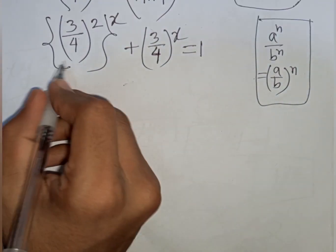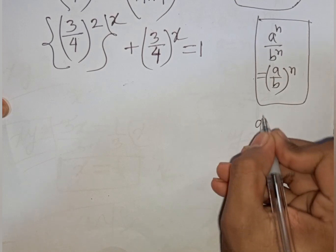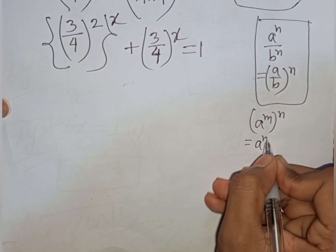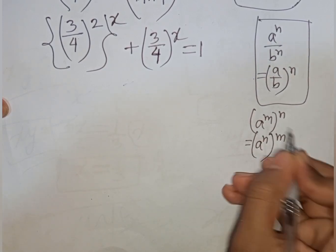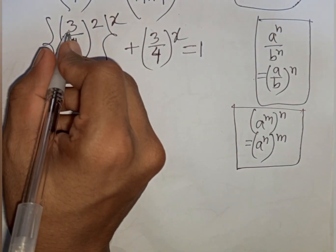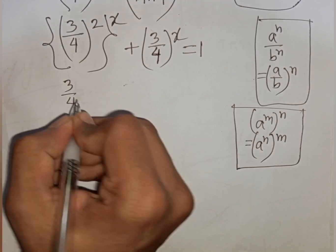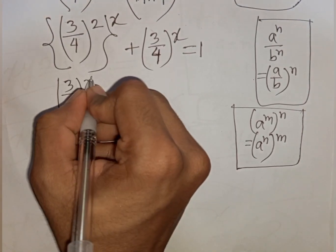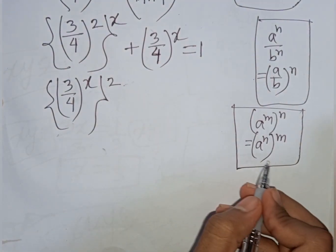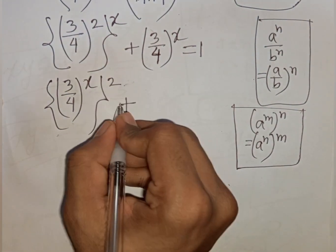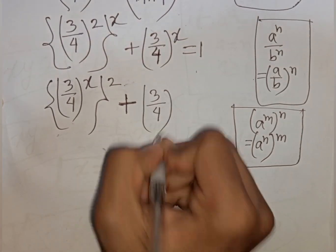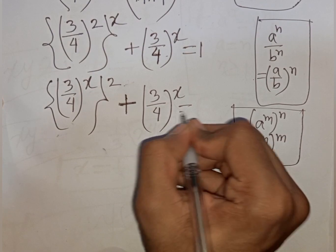Now we apply the formula: (a^m)^n = a^(mn). According to this rule, we can write (3/4)^x raised to the power 2 — that is (3/4)^(2x) — plus (3/4)^x equals 1.